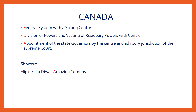Features borrowed from Canada are: federal system with a strong center, division of powers and vesting of residual powers with the center, appointment of state governors by the center, and advisory jurisdiction of the supreme court. The shortcut is 'Flipkart ka Diwali amazing combos' — F for federal system, D for division of powers, A for appointment of governors and advisory jurisdiction.